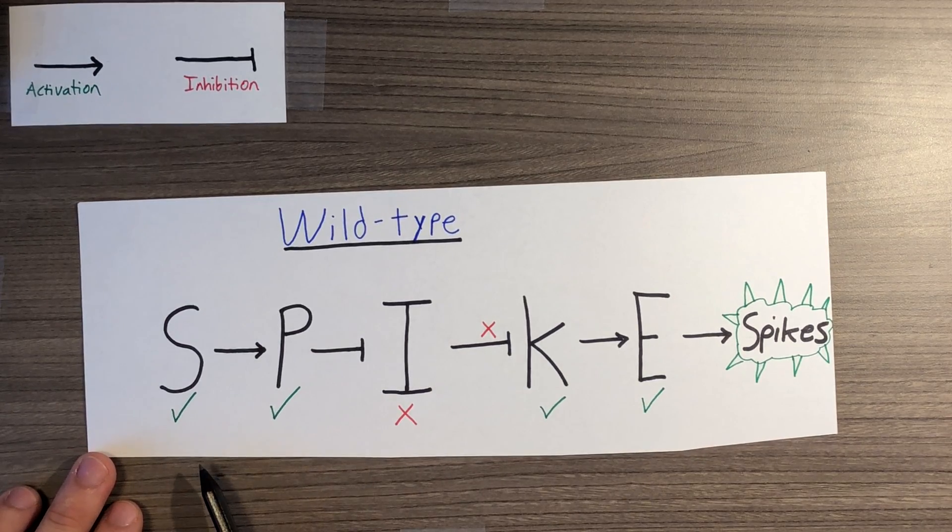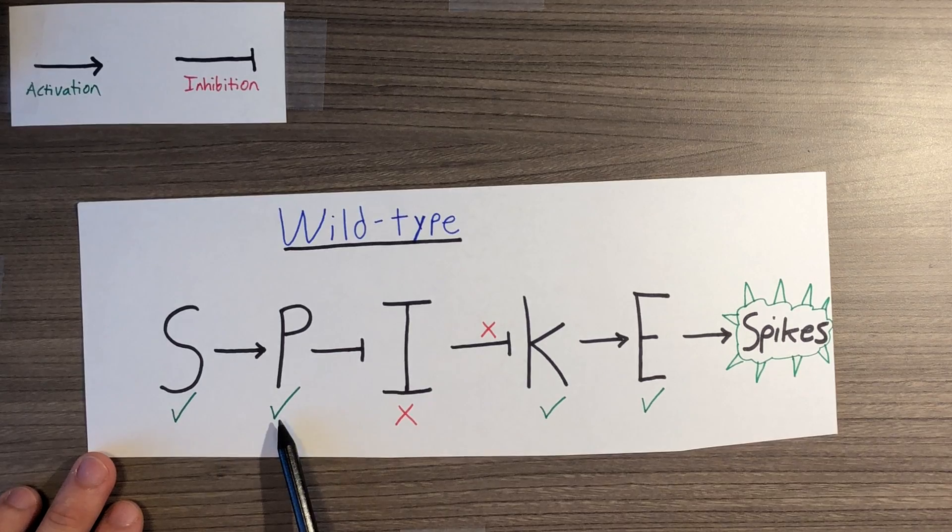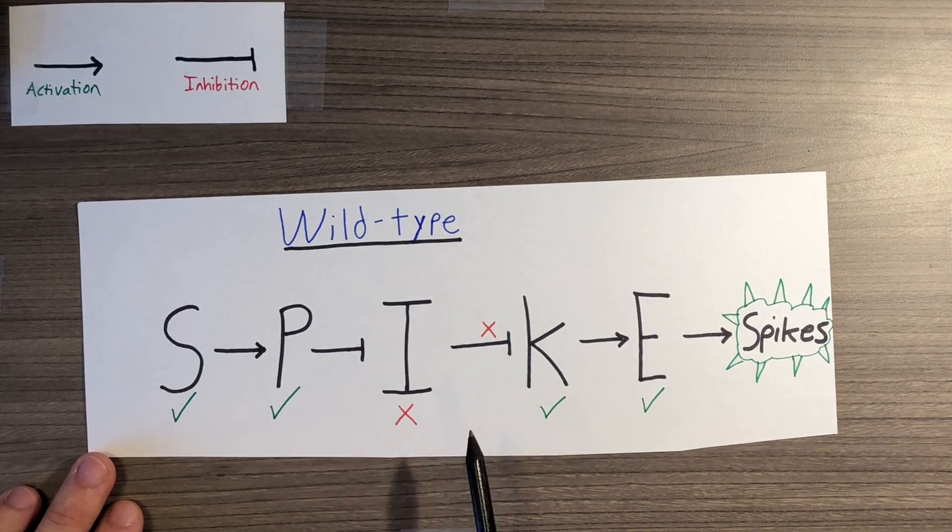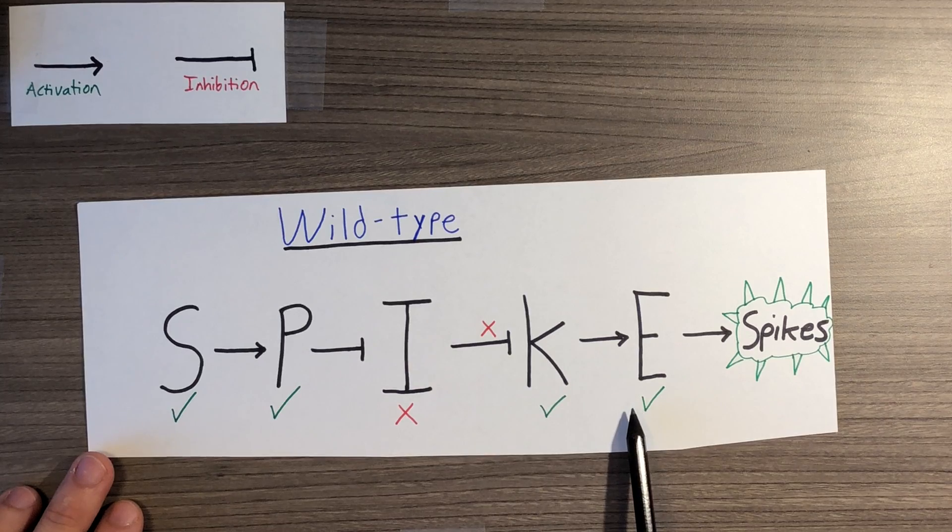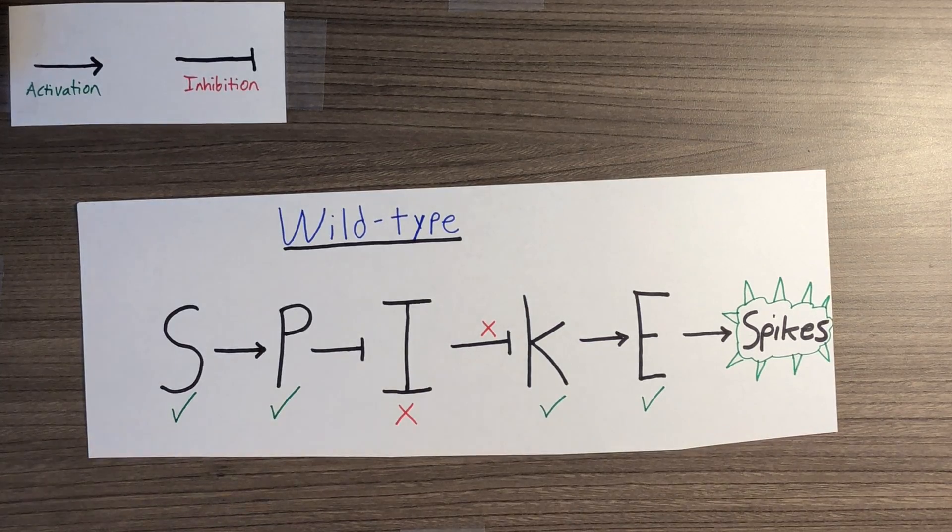Looking at this wild type example, the S gene will activate the P gene. The P gene will inhibit the I gene, whose function is to inhibit the K gene from being blocked. This means the K gene activates the E gene, which is the gene responsible for producing skin cells with spikes.